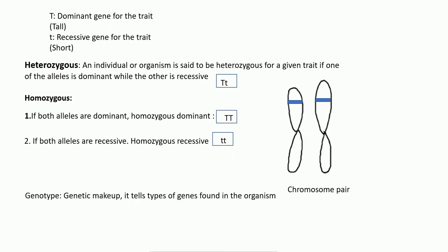Now some more definitions. Genotype is the genetic makeup of an organism — it tells you what types of genes are found in the organism. In a heterozygous organism we have one dominant and one recessive allele. In homozygous dominant we have both dominant alleles, and in homozygous recessive we have both recessive alleles.